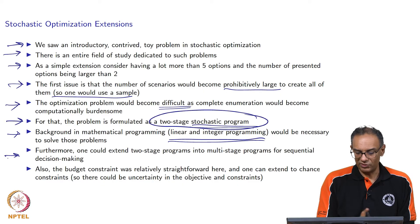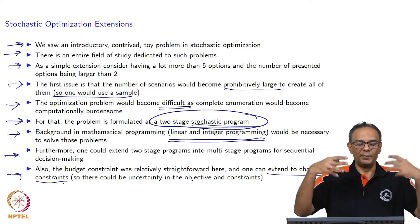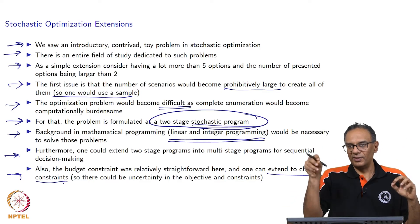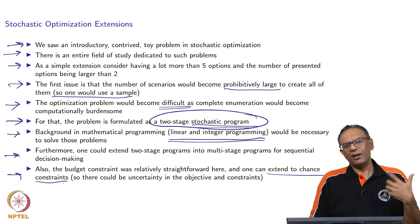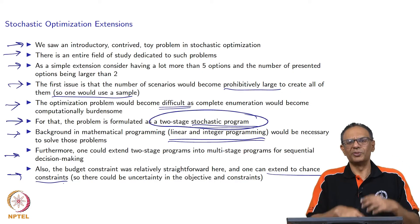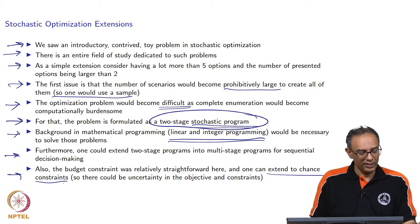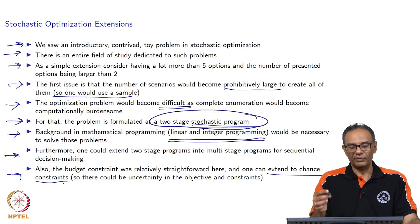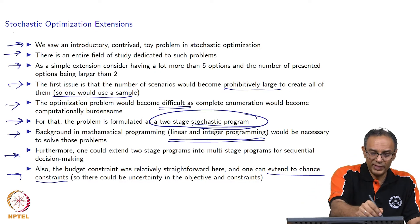Doing the budget constraint was quite straightforward, but consider constraints where there is a probability involved — for example, the actual dollar cost is not deterministic and you say it should be less than 60 units with probability 0.95, meaning 95 percent of the time you have to be under it. You could also apply this to cost: you want to be 95 percent sure of being within your budget. In situations where there is uncertainty in your values, you have what is called a chance constraint. These are many things that can be incorporated into a stochastic program, and there are a lot of interesting extensions.